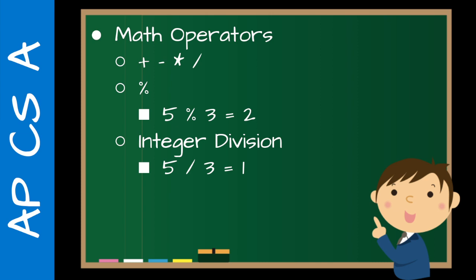Then there's the modulus — the percent sign. Students might not be familiar with that, so you definitely want to go over some examples. The one here on screen is 5 % 3, or 5 modulus 3, which equals 2, because it gives you the remainder — 3 goes into 5 once with 2 left over.